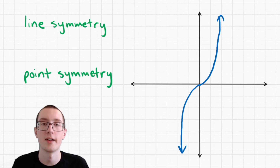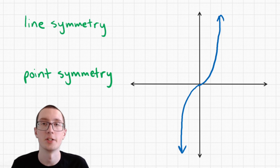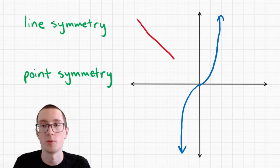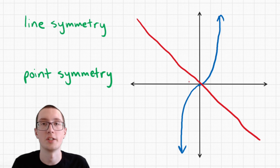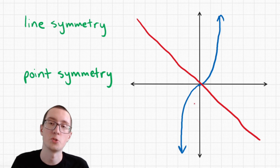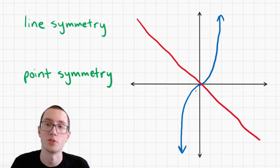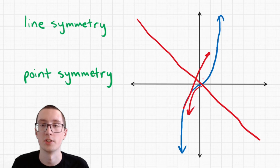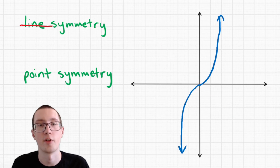What about this graph? Can we figure out if it has line symmetry and point symmetry? Let's see if it has line symmetry — is there anywhere we can draw a line that will be a mirror image of both sides? If I draw a line here, this is not a mirror image. Maybe we could draw a line here, but if you tilt your head or look closely, this is not a mirror image of this, because it's dipping upward one way but downward the other. So no, this graph does not have line symmetry.